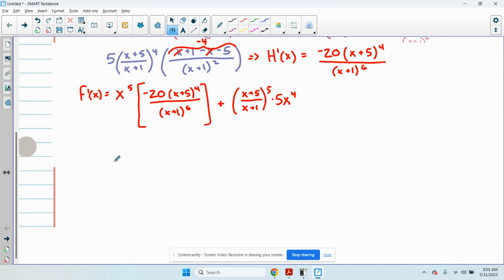This is negative 20x to the fifth times x plus 5 to the fourth over x plus 1 to the sixth, plus 5x to the fourth, x plus 5 to the fifth, over x plus 1 to the fifth.